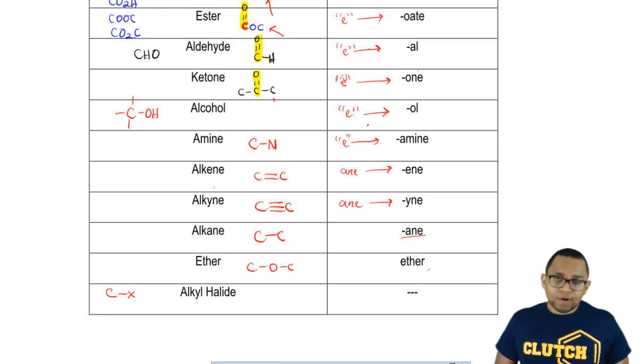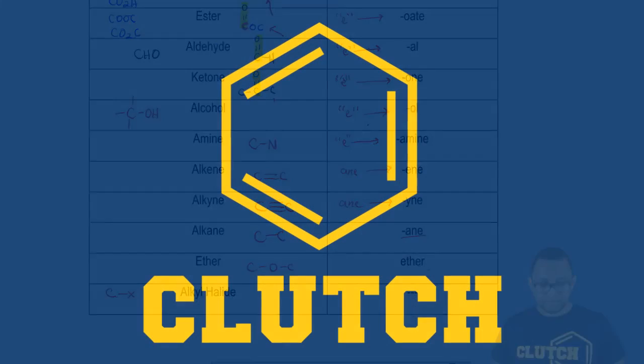These are our major functional groups that you're expected to know at this point. When you get to organic, you'll learn a few more functional groups that will be added to this list. Here, this is just a list of priority. You'll learn more about priority when you get to organic 1. Don't worry about that too much. Just realize here, when those functional groups are present, they change the ending of the name.